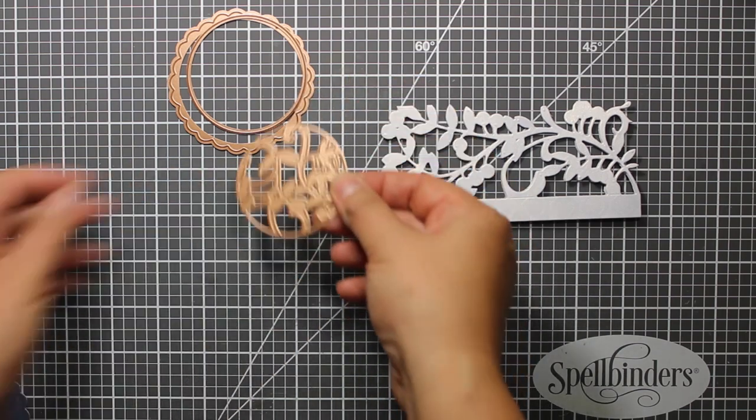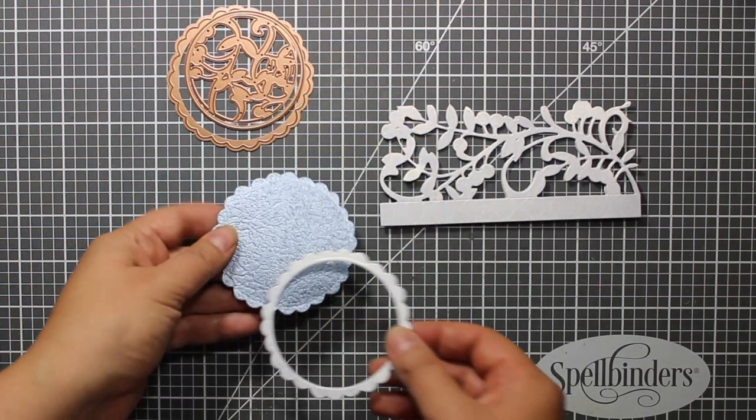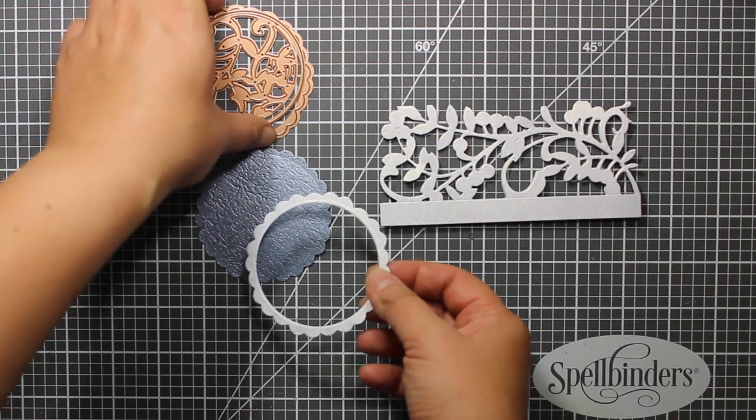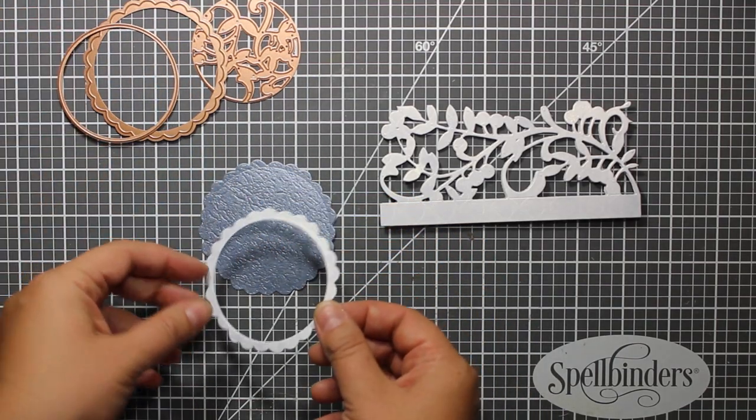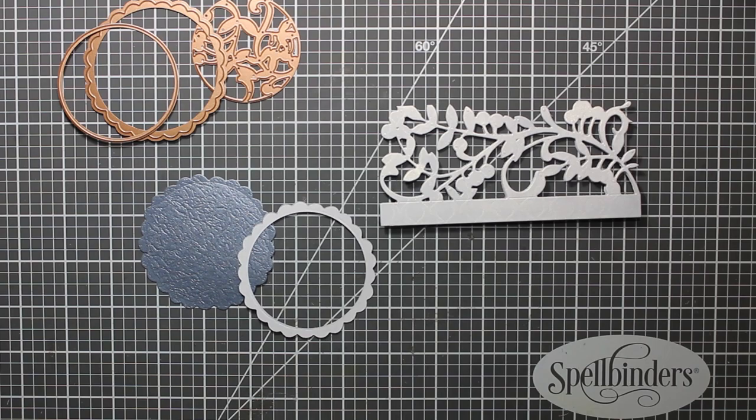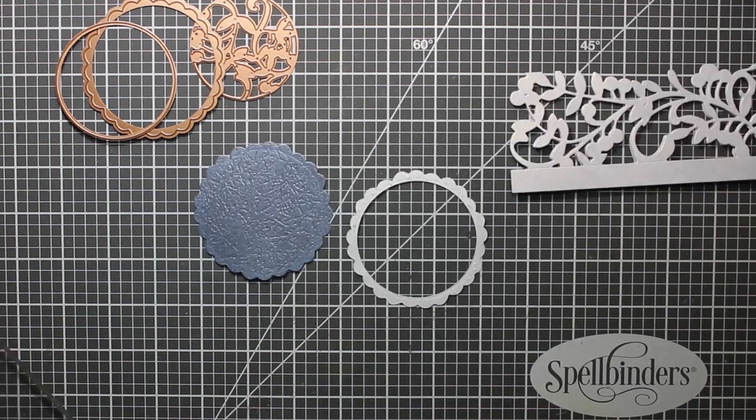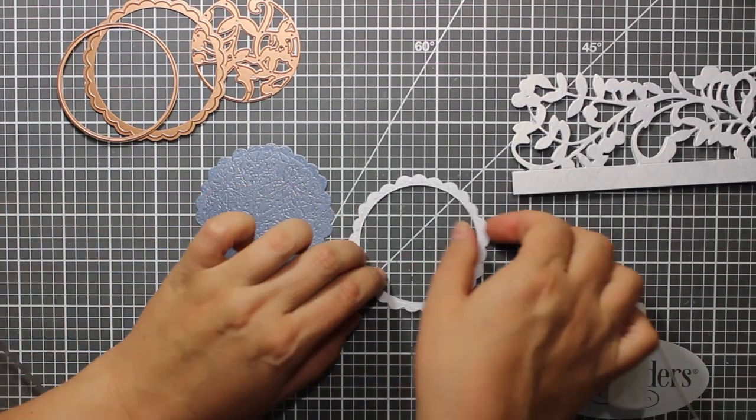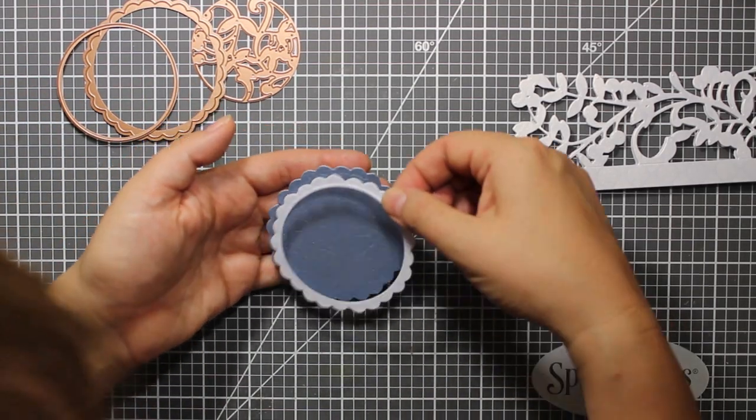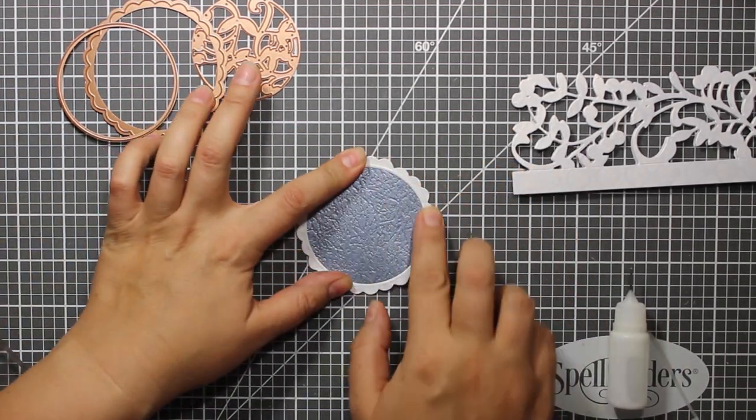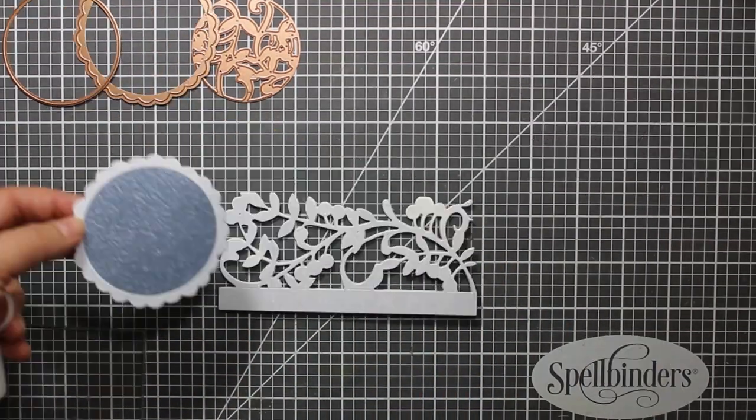So I'll be using the mistletoe doily set. It includes three dies and this time I've die cut the background and the frame out of blue and white cardstock. Then I'm going to attach the frame to the background. The edge of this die is quite organic. It's not symmetrical so make sure you align the edges properly.